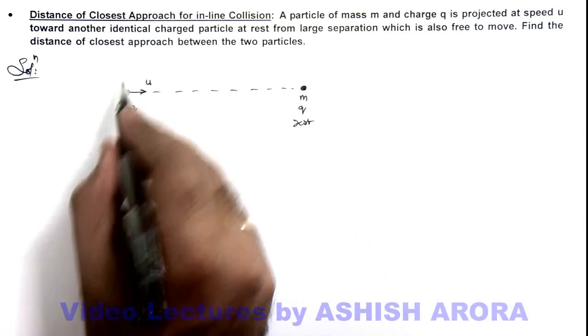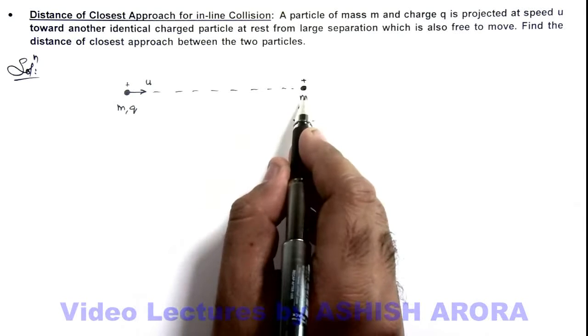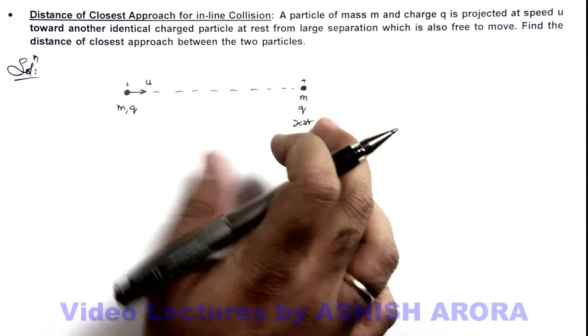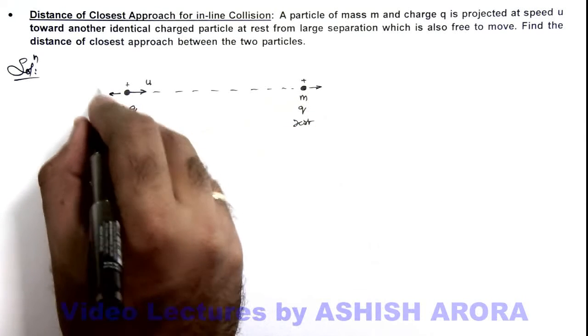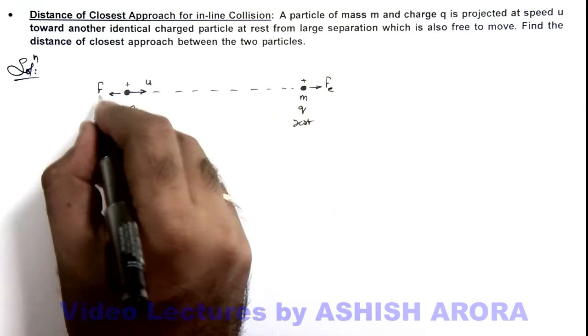We know when the two positively charged particles get close to each other they'll repel each other. Due to the repulsive force, it'll start moving and it'll be retarded. The electric force will be acting in opposite direction.